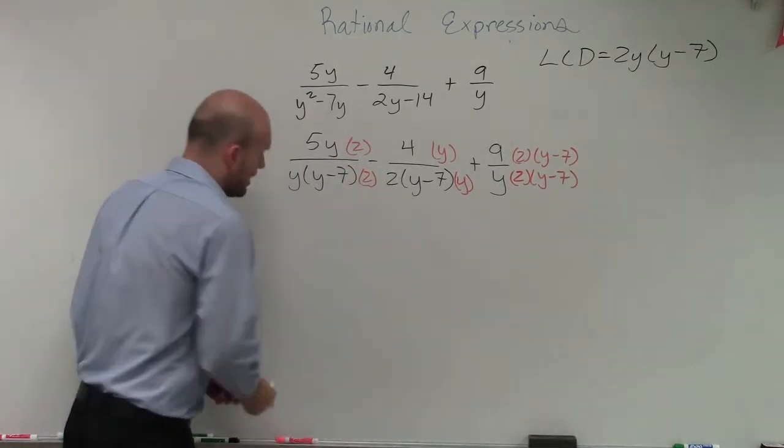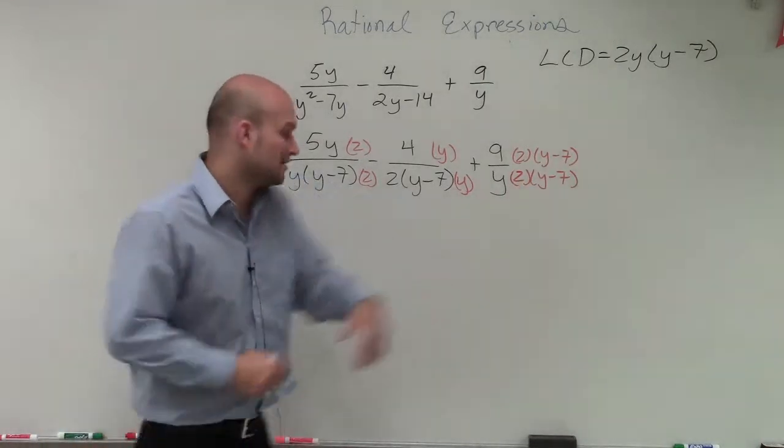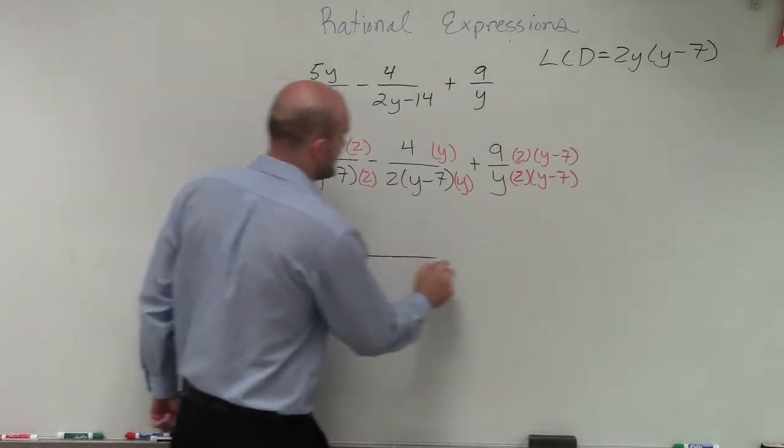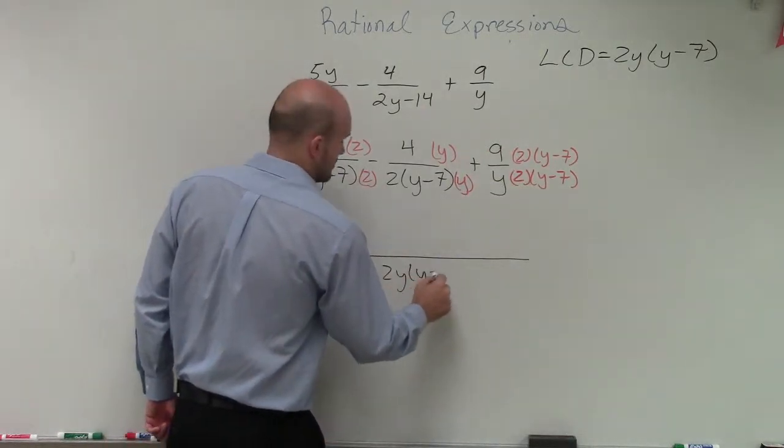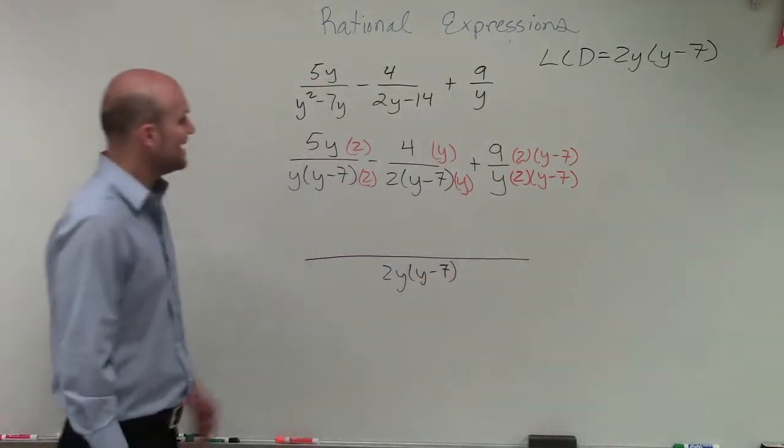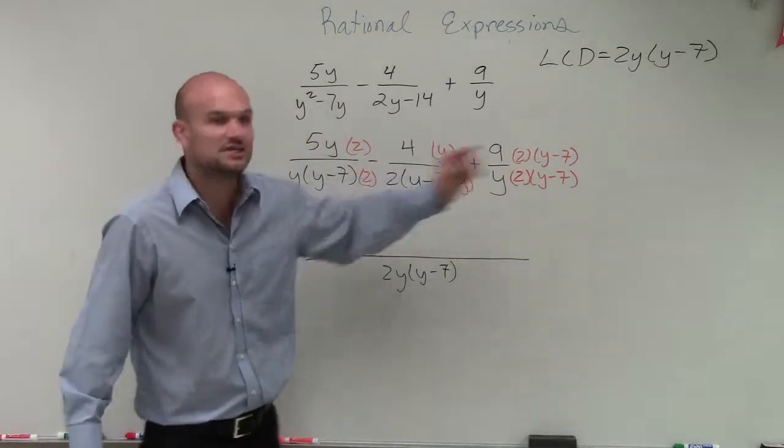Now, when I do this work, I already know that I'm multiplying to get my LCD. So I'm just going to make a nice big line and I'm going to write my LCD in the denominator. Then I'm going to apply my multiplication for each numerator.